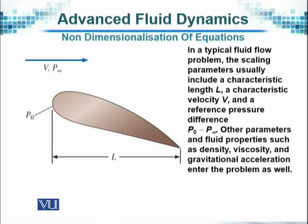In a typical fluid flow problem, the scaling parameters usually include a characteristic length L, a characteristic velocity V and a reference pressure P₀ minus P infinity. So, this is a typical pressure term. They will have the same terminology and these are the most common parameters that we come across in a fluid flow.